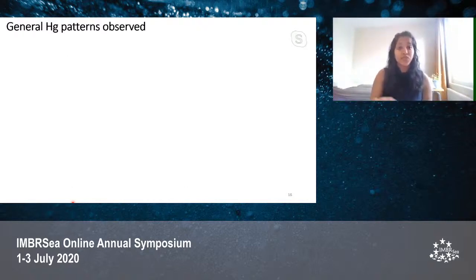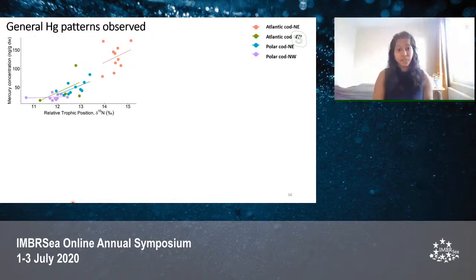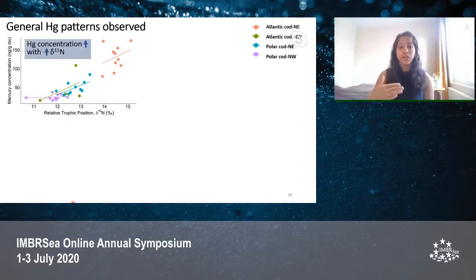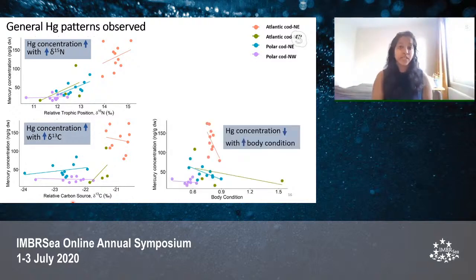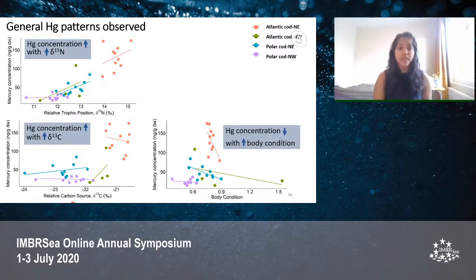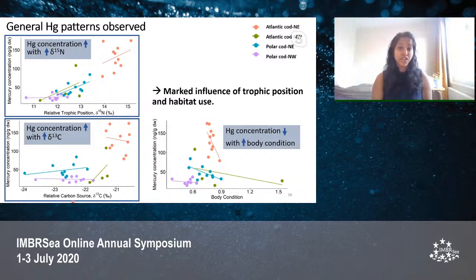We looked at general mercury patterns with respect to the factors. Mercury concentration on the y-axis was plotted against the most relevant biological and ecological factors. Mercury concentration was found to increase with increasing delta-15N — that is, with increasing trophic levels. Mercury concentration was also found to increase with increasing delta-13C — that is, with increased benthic feeding. Mercury concentration was found to decrease with increasing body condition. All these results corresponded to what we found in the literature. The most important factors were delta-15N and delta-13C, leading us to conclude that there is a marked influence of trophic position and habitat use on mercury variations in the Barents Sea.